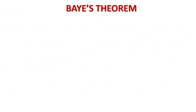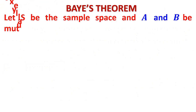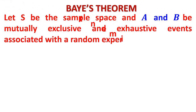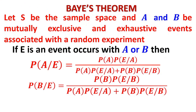Let us see what Bayes' Theorem is. Let SP be the sample space, and A and B be mutually exclusive and exhaustive events associated with a random experiment. If E is an event that occurred with A or B, we have already seen how to find the probability of E given A — that is, the probability of the occurrence of E knowing that A has occurred. Similarly, the probability of E knowing that B has occurred came in our total probability idea.